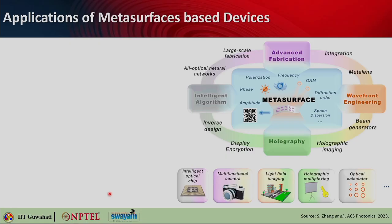Metasurface — I hope you all remember from the previous lectures — gives you control on the amplitude, phase, polarization, and also on the frequency of the incident light. You can modify those using metasurface. The modification can be seen either on the reflected wave or the transmitted wave. You can also see applications like orbital angular momentum, diffraction order, space diffraction, dispersion, and all these things. They also have application in wavefront engineering, holography, advanced manufacturing, and intelligent surfaces. We will come into each of these briefly.